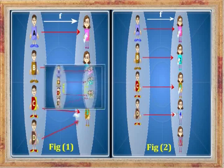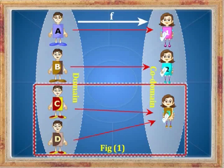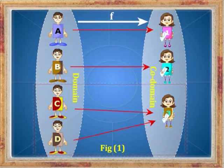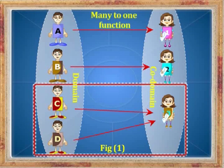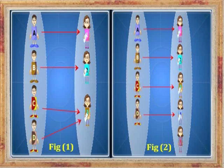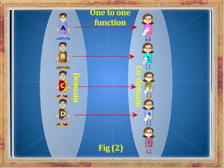Now when we talk about figure 1, it has one pair of elements — that's C and D in the domain — which have the same image 3. So this type of function is known as many-to-one. But in figure 2, all elements of the domain have different images, therefore this type of function is known as one-to-one.